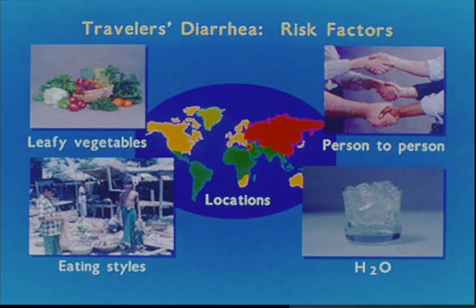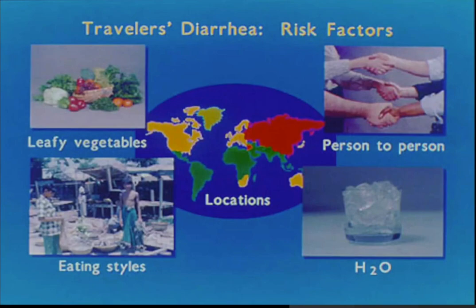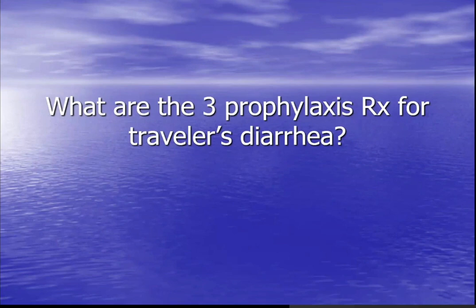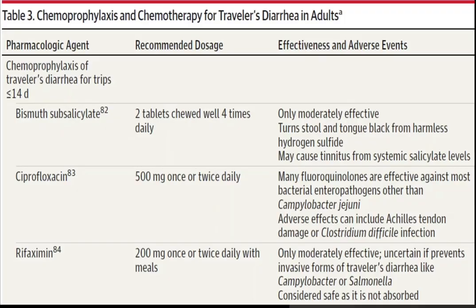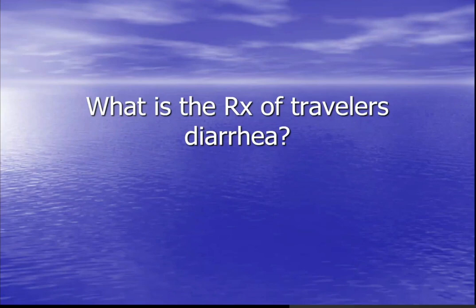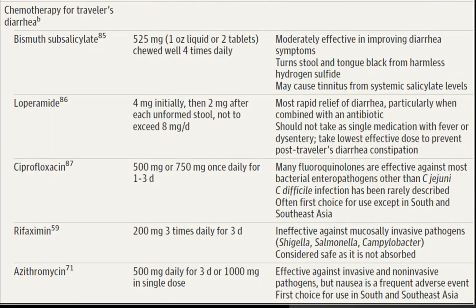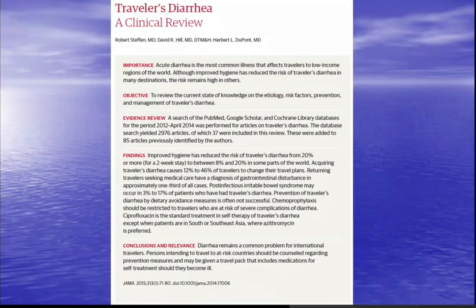For prophylaxis against traveler's diarrhea, the three options per literature are bismuth, Cipro, and rifaximin. If you acquire traveler's diarrhea and want to treat it, the treatment options are bismuth, loperamide, Cipro, rifaximin, or azithromycin. This can be found in the JAMA 2015 Traveler's Diarrhea article; the expert in this area is Herbert DuPont.